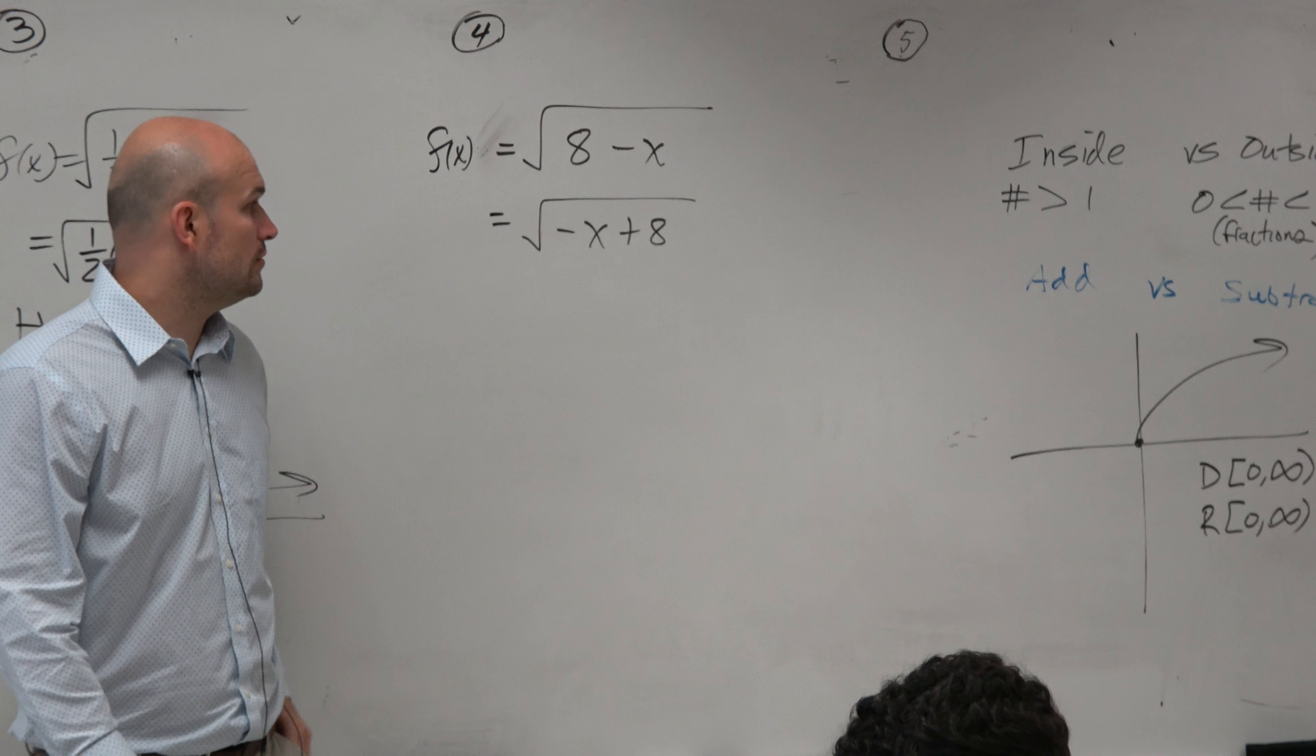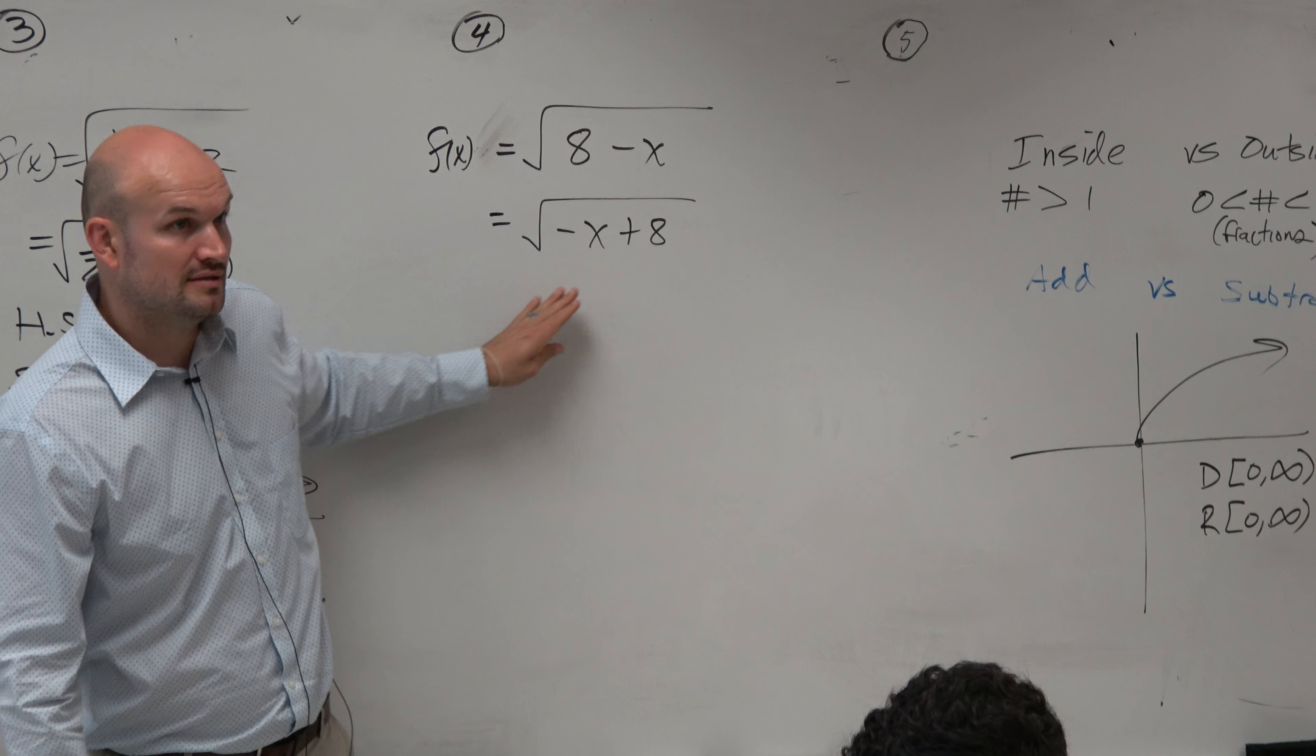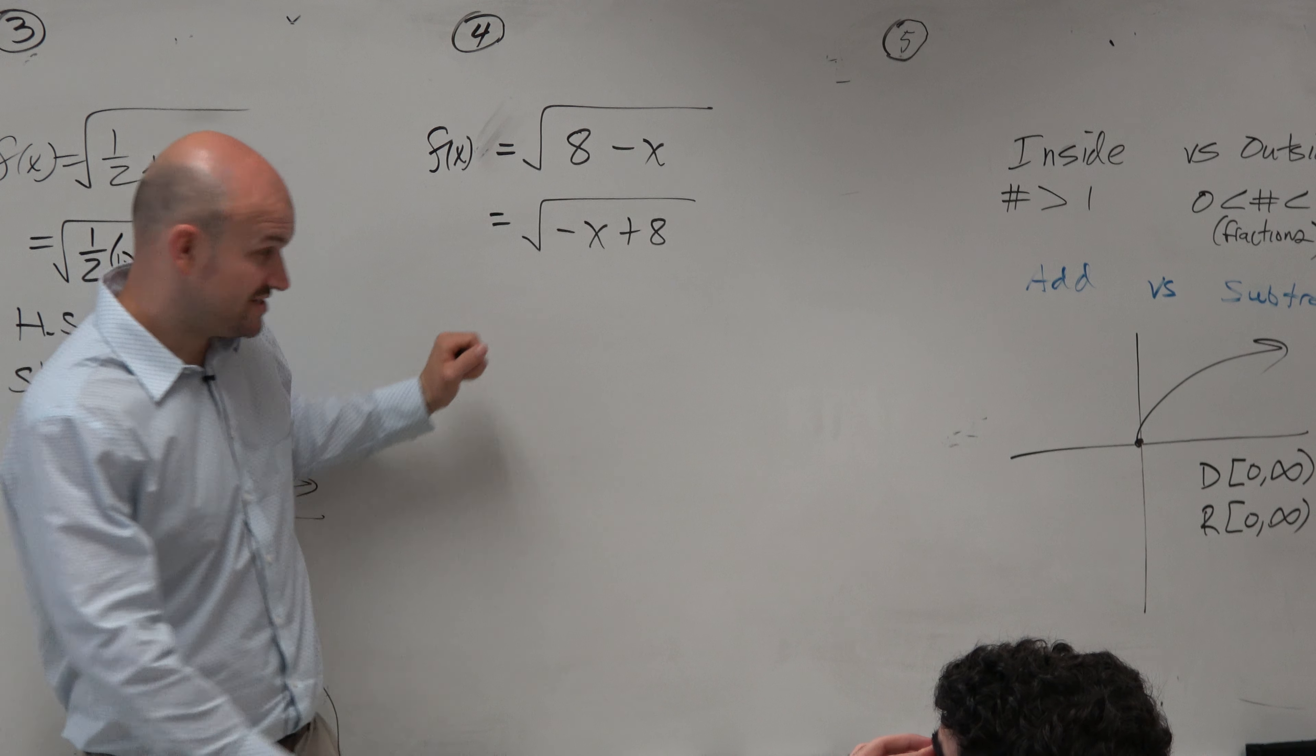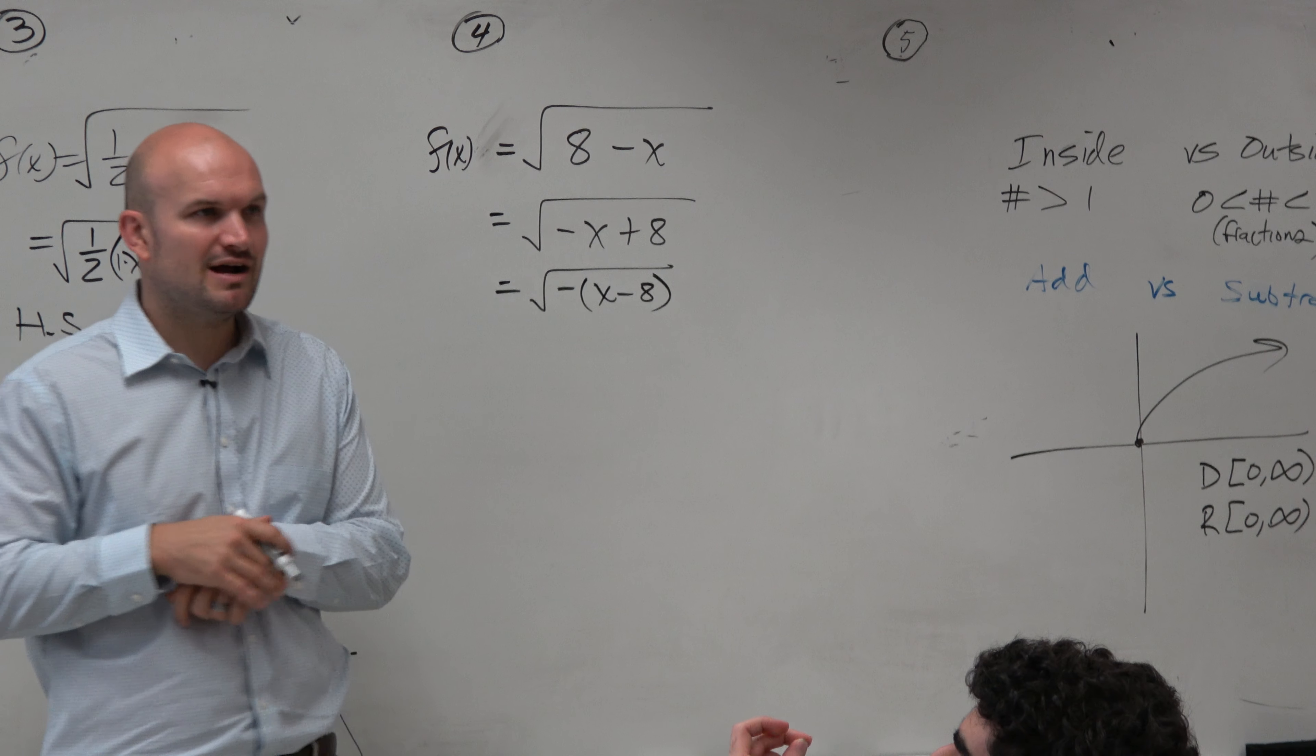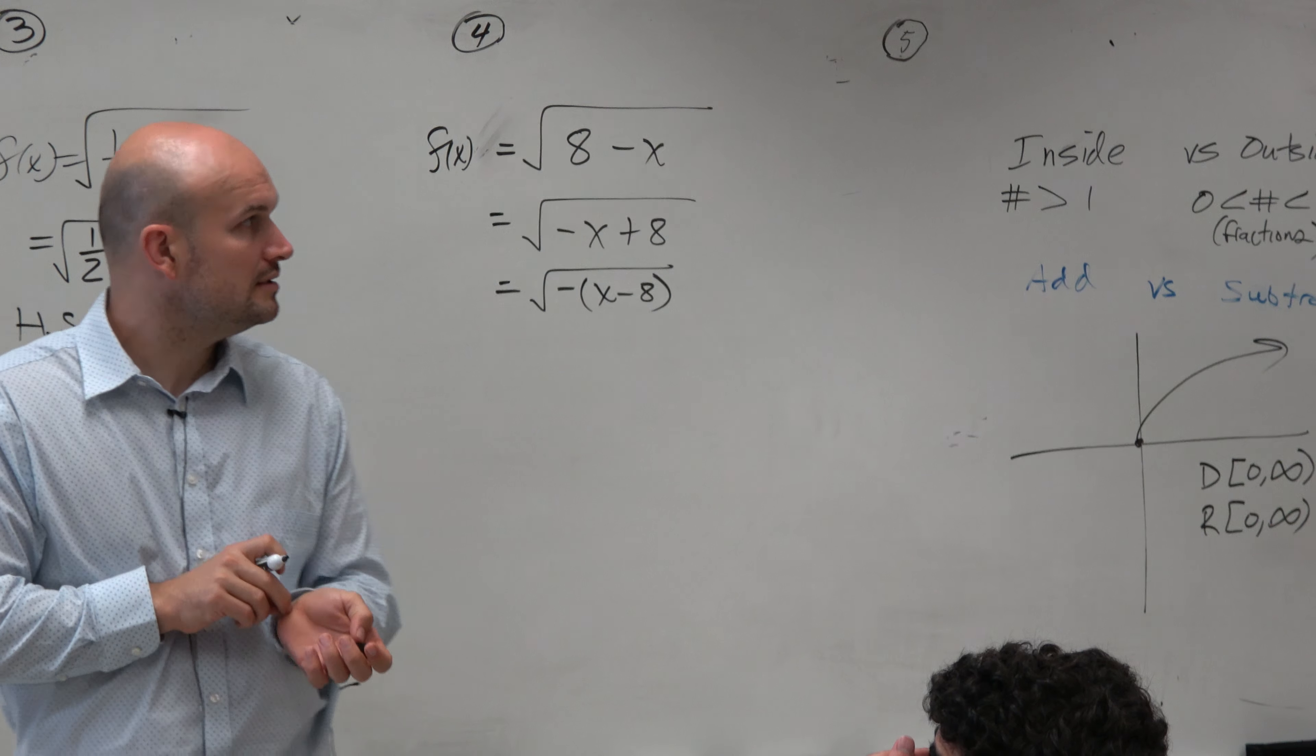Now we recognize we have a b and we have a c. We have a transformation, and my x does not have a positive 1 in front, so therefore I need to factor out. We need to factor out that negative 1. And you guys can see I'm doing that.